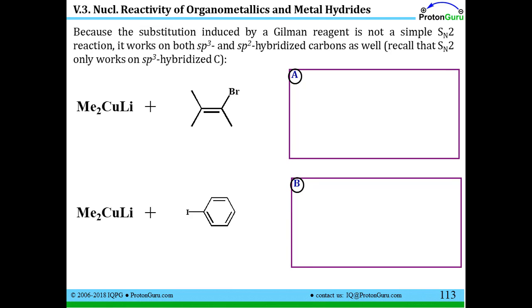Now we're going to see a couple additional pieces of evidence that when a Gilman reagent reacts with a compound with a leaving group, it's not a simple SN2 reaction. For example, if I try to do an SN2 reaction on this compound, I see that my leaving group is attached to an sp2 hybridized carbon. Well, the SN2 reaction doesn't work on sp2 hybridized carbons. It only works on sp3 hybridized carbons.